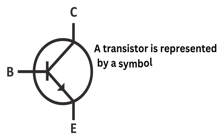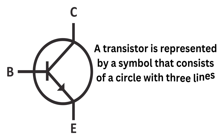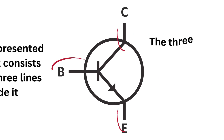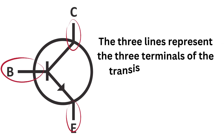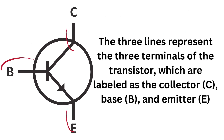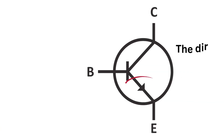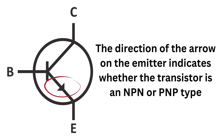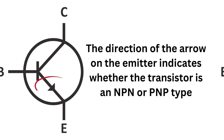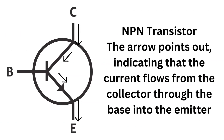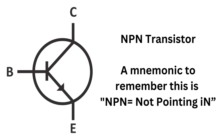In a circuit, a transistor is represented by a symbol that consists of a circle with three lines inside it. The three lines represent the three terminals of the transistor, labeled as the collector C, base B, and emitter E. The direction of the arrow on the emitter indicates whether the transistor is an NPN or PNP type. For NPN, the arrow points out, indicating that current flows from the collector through the base into the emitter. A mnemonic to remember this is NPN: not pointing in.